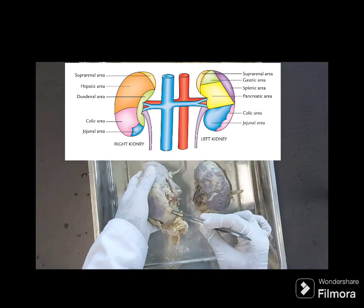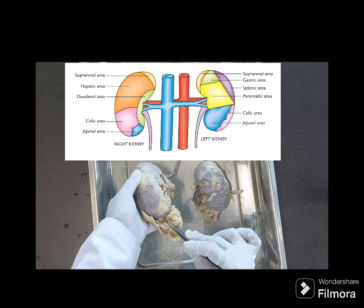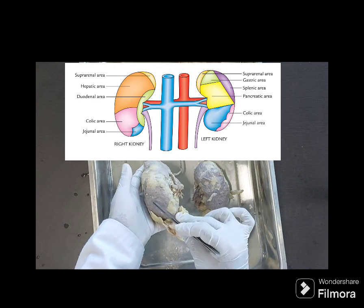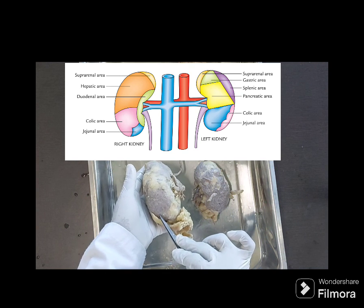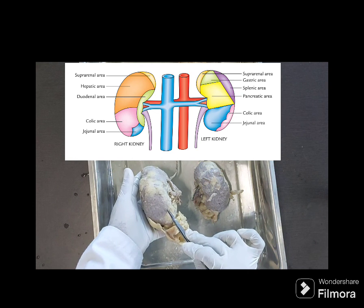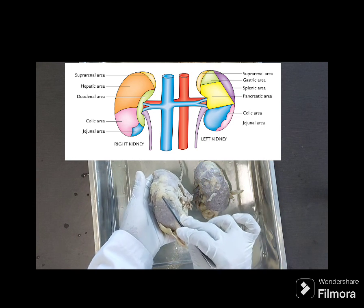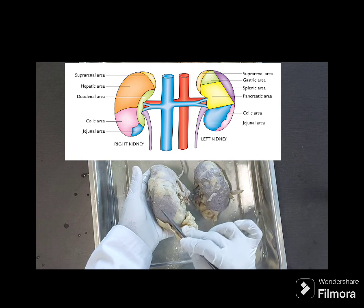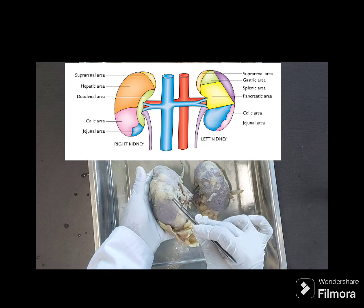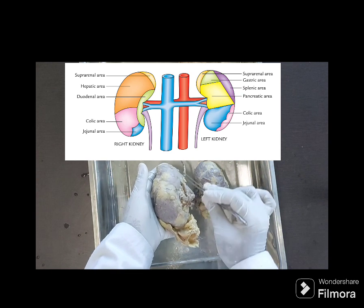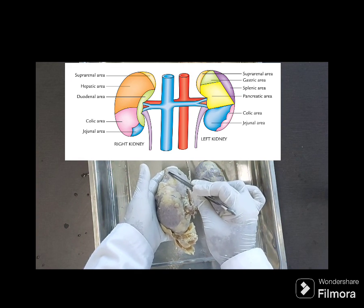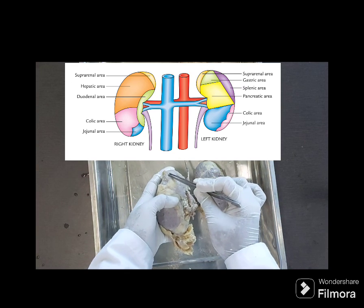For the anterior relations of the left kidney: at the upper pole we have the suprarenal gland. The upper lateral border is related to the spleen. Just below the splenic area is the gastric area — the stomach is related. Below that, the tail of the pancreas is related at the hilum level — this is the pancreatic area. Below that is the jejunum area, and further below is the colic area.